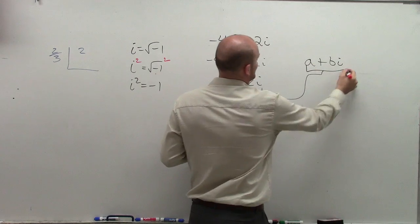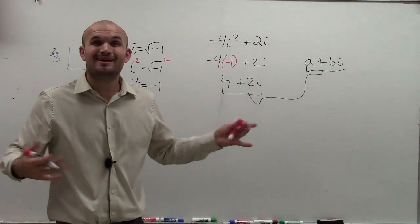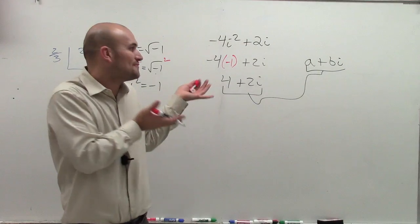Now it is in standard form, where a equals 4, b equals 2, and we got i equals i, standard form, done.